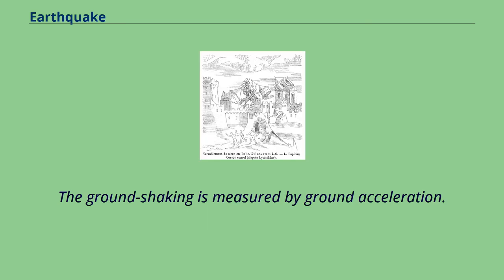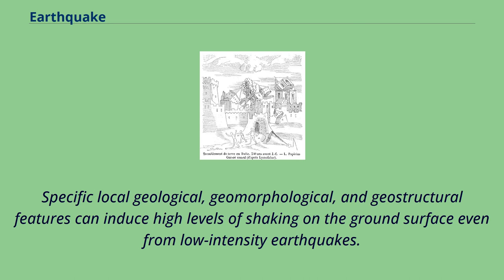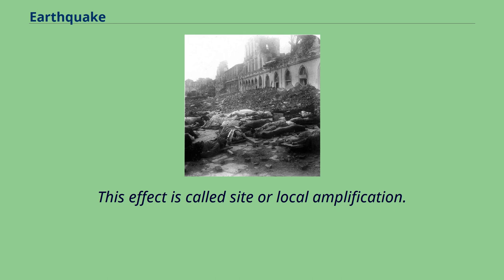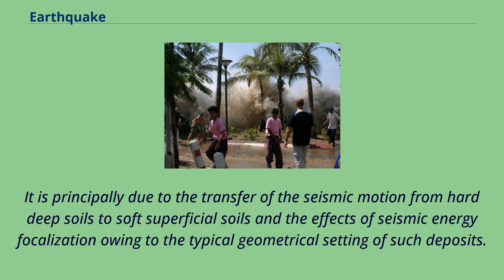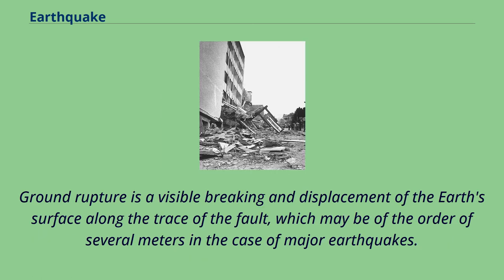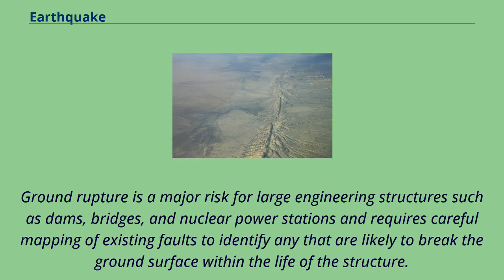Specific local geological, geomorphological, and geostructural features can induce high levels of shaking on the ground surface even from low-intensity earthquakes — an effect called site or local amplification. It is principally due to the transfer of seismic motion from hard deep soils to soft superficial soils. Ground rupture is a visible breaking and displacement of the earth's surface along the trace of the fault, which may be of the order of several meters in major earthquakes. Ground rupture is a major risk for large engineering structures such as dams, bridges, and nuclear power stations.